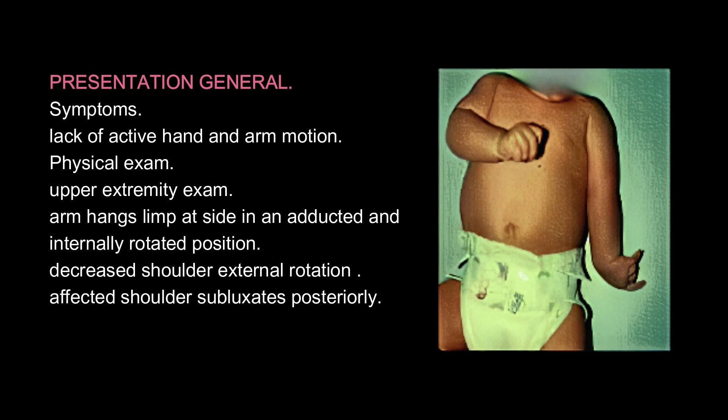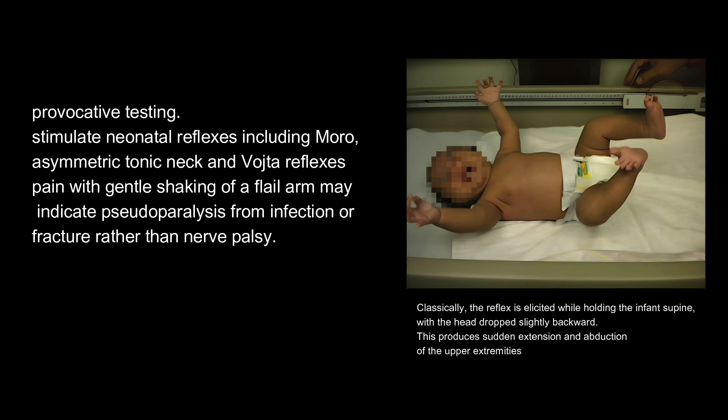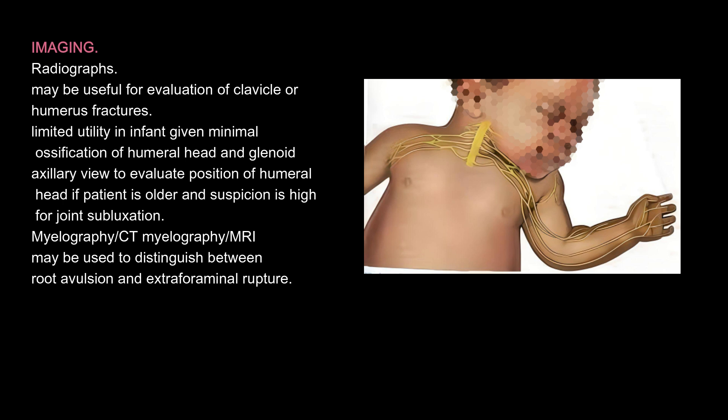Presentation: Symptoms include lack of active hand and arm motion. On physical exam, the arm hangs limp at the side in an adducted and internally rotated position, with decreased shoulder external rotation and the affected shoulder subluxating posteriorly. Provocative testing includes stimulation of neonatal reflexes including Moro, asymmetric tonic neck, and Vojta reflexes. Pain with gentle shaking of a flail arm may indicate pseudoparalysis from infection or fracture rather than nerve palsy. The Moro reflex is elicited while holding the infant supine with the head dropped slightly backward, producing sudden extension and abduction of the upper extremities.